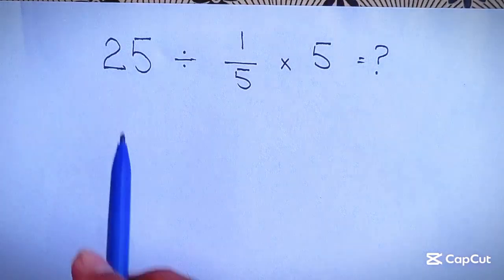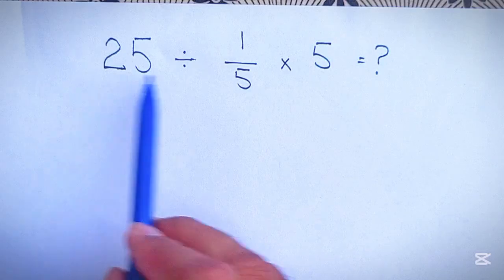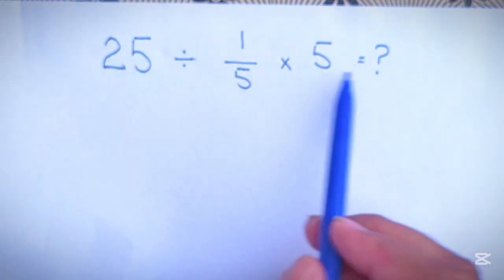Hi everyone and welcome to this video. In this video we want to find the value of this expression: 25 divided by 1 over 5 and then times 5.